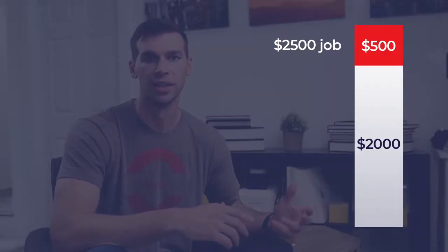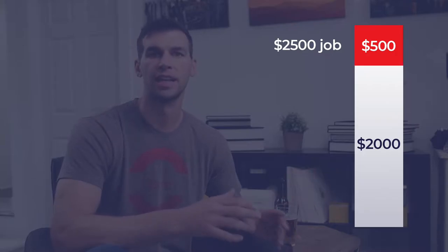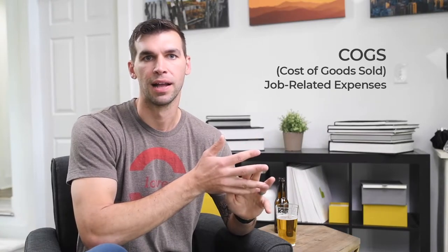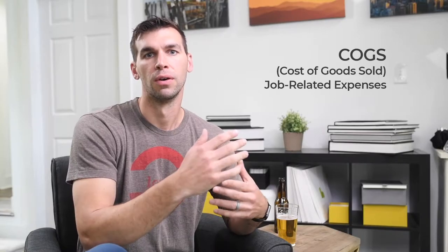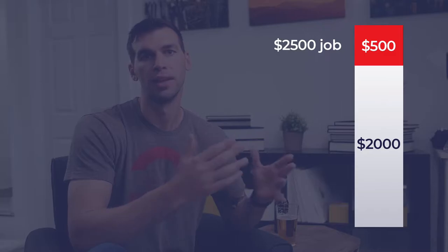Most of us know what it costs us to actually perform a job. For this business we're going to say it cost them $500 for every $2,500 job they performed. We refer to this as cost of goods sold, or COGS. This is things like contract labor, job supplies — anything related to the job itself. So for this example, that's $500 per job, which leaves us with $20,000 of COGS at the end of the year for the 40 jobs that we did.